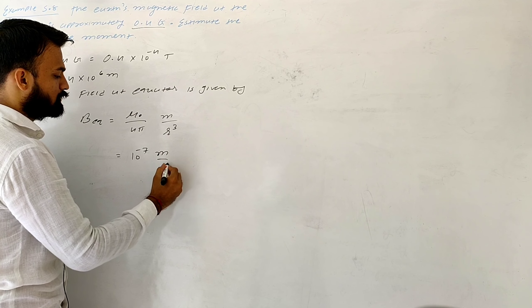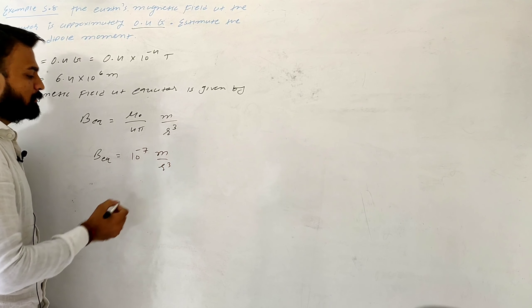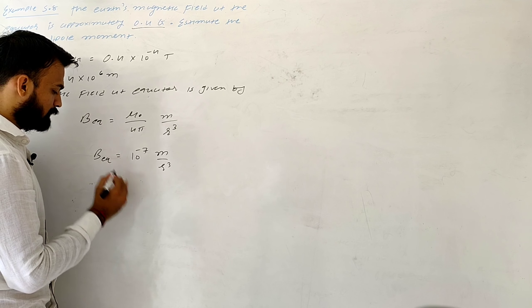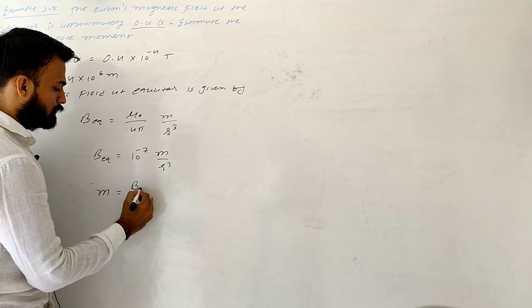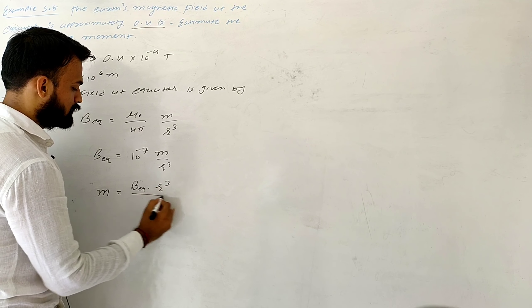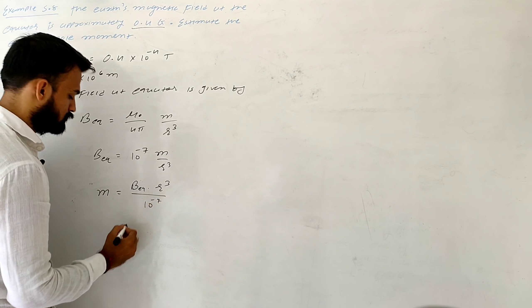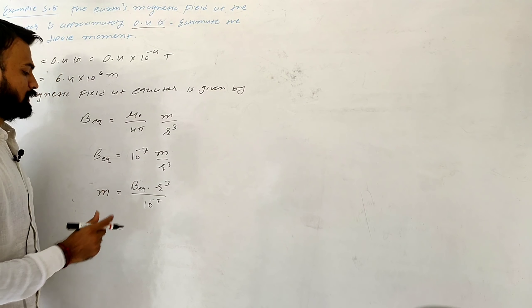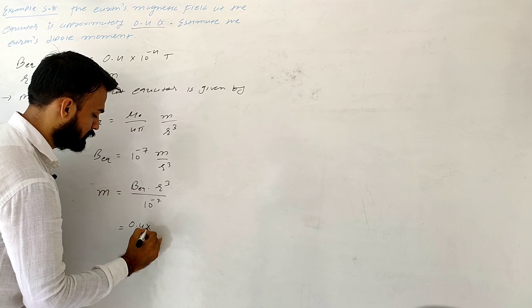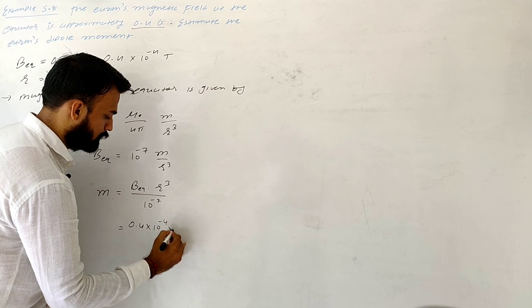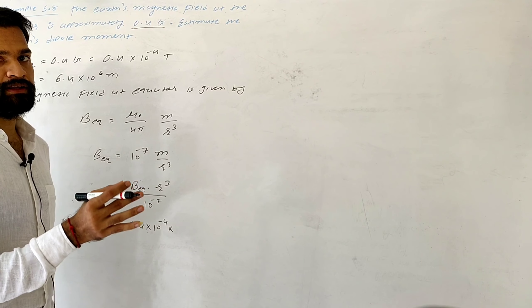So the magnetic field at the equator: B_eq equals 10 to the minus 7 times m over r³. Now putting in the value of magnetic field at the equator, which is 0.4 into 10 to the minus 4, and r is the radius of Earth. We have to find the magnetic moment.